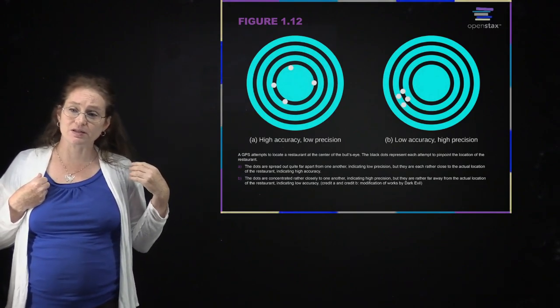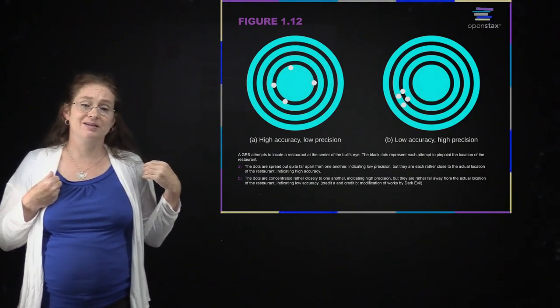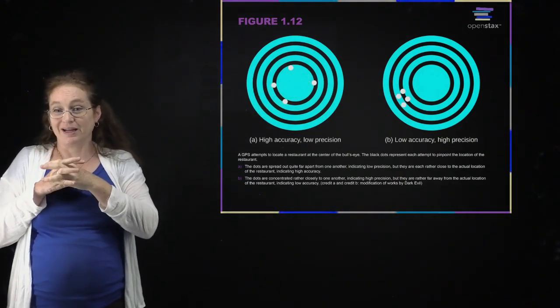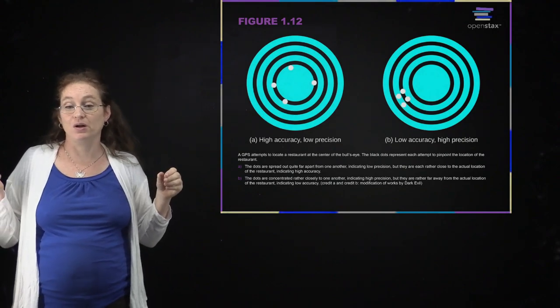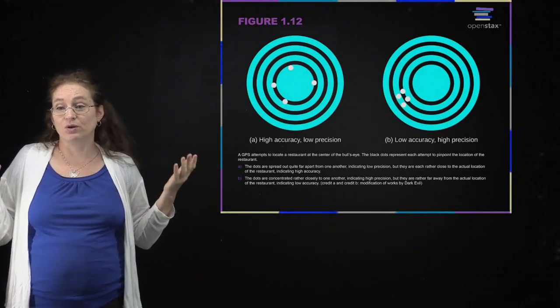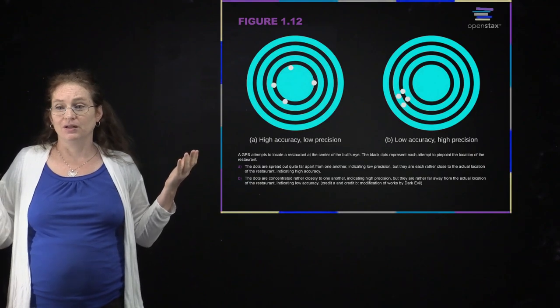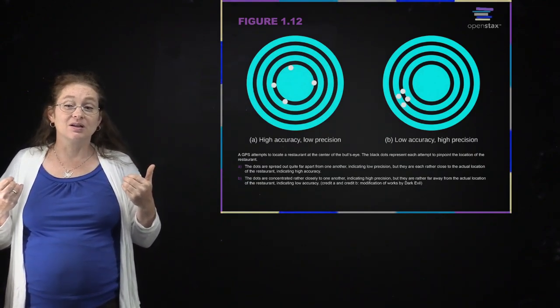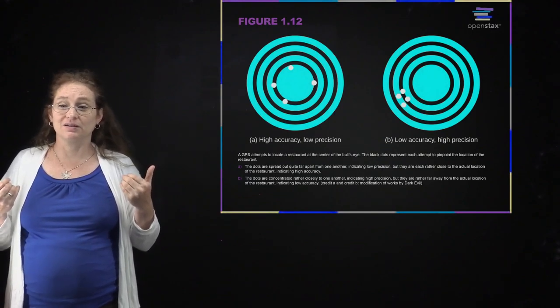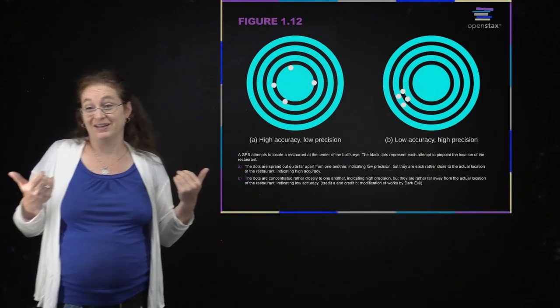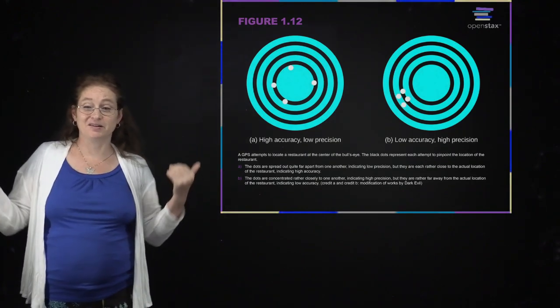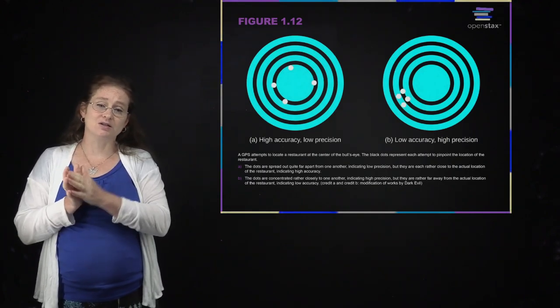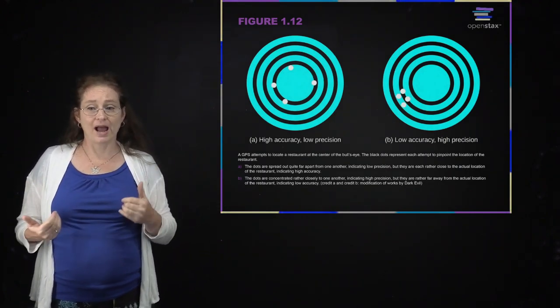This relates back to the previous discussion of models because sometimes you're after knowing an answer within, what's the distance between Knoxville and Nashville, you don't need to know that answer to micrometers. You just need to know it to within kilometers. If you're going to do the drive, the odds are a kilometer here and there doesn't actually make a very big difference. So you might actually sacrifice precision for accuracy.